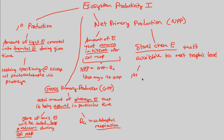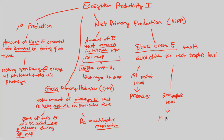The first trophic level is, of course, producers. These are the ones that create a GPP and then produce an NPP — a net primary production. This NPP is what the second trophic level, primary consumers, really wants. Primary consumers are the first ones to access this net primary production — the leftovers after autotrophic respiration has been subtracted out.